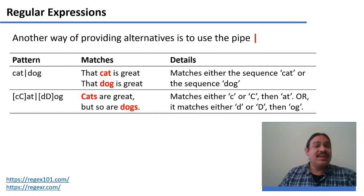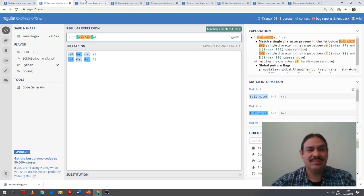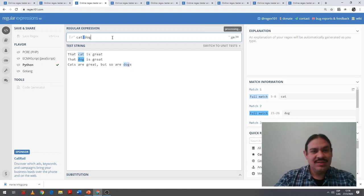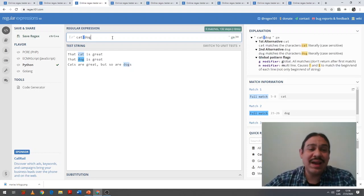There's other ways of providing alternatives for regular expressions. For example, you can use the pipe character, the or character. If you have a string like the cat is great, the dog is great, you can find either the word cat or dog. As you can see here, cat pipe dog will find you either one of those, but only with the lowercase.